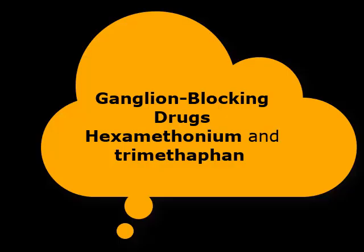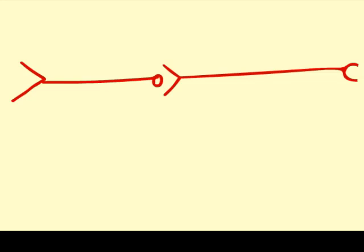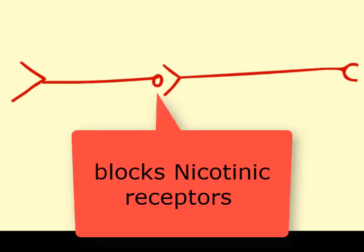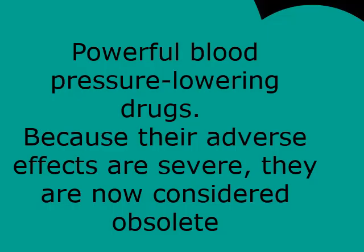Ganglion blocking drugs — hexamethonium and trimethaphan — block nicotinic receptors in autonomic ganglia and inhibit transmission between preganglionic and postganglionic neurons in the autonomic nervous system. They are extremely powerful blood pressure-lowering drugs, but because their adverse effects are severe, they are now considered obsolete.